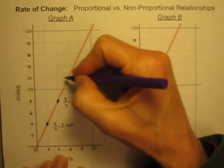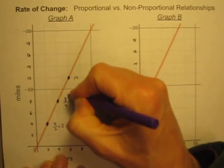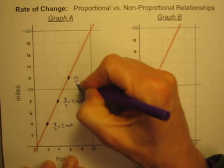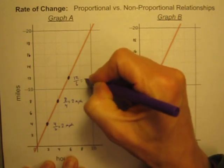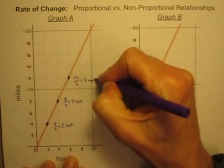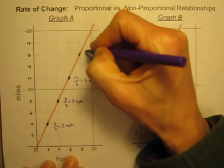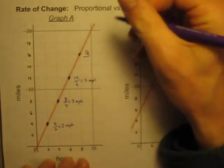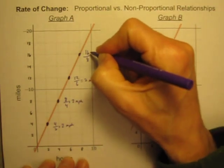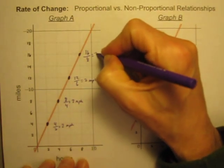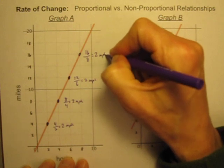And I could keep going to any point on this line. Twelve miles in six hours. Twelve divided by six is still two miles per hour. Or, sixteen miles in eight hours. Sixteen divided by eight is still two miles per hour.